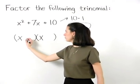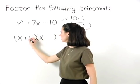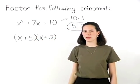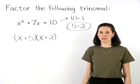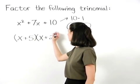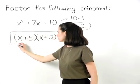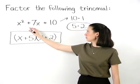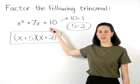So we put a positive five in our first binomial, and a positive two in our second binomial, and we have our answer: x plus five times x plus two, which is a factored version of x squared plus seven x plus ten.